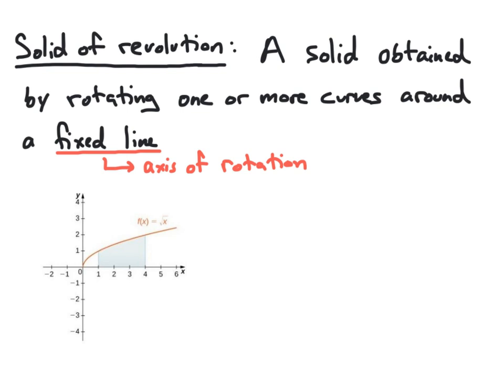For example, here we see a region that is bounded by four different curves. We have the vertical line x equal 1 on the left side, the x-axis along the bottom, the vertical line x equal 4 on the right side, and on the top we have y equal square root of x. So this region is bounded by these four curves.